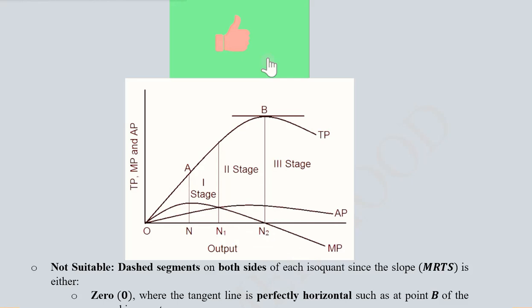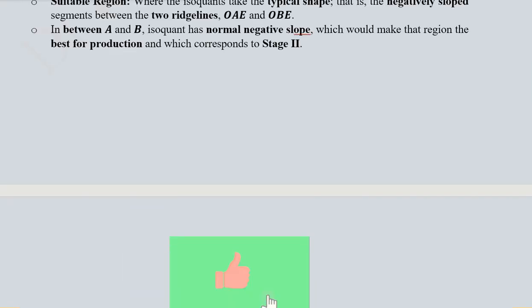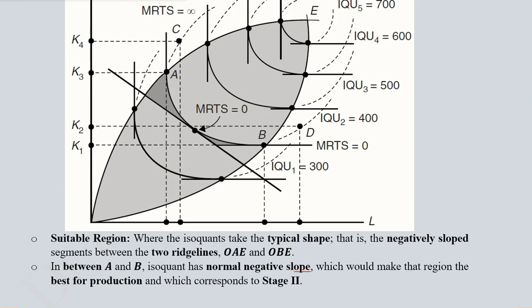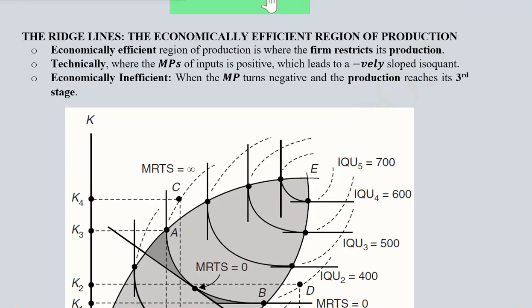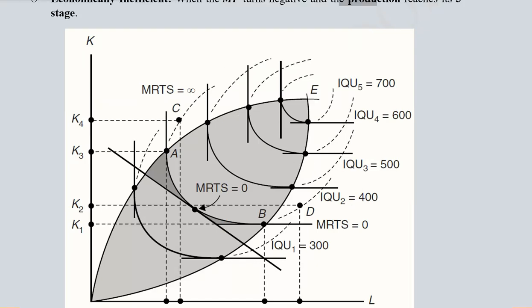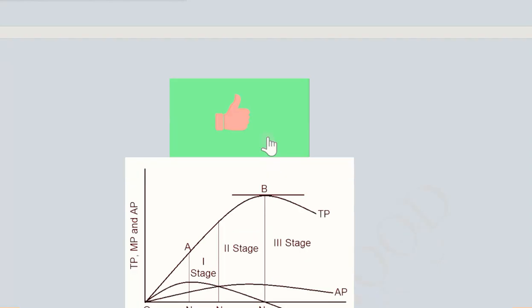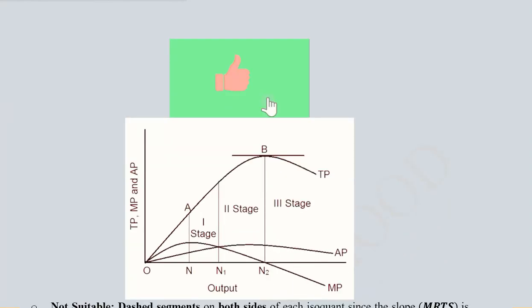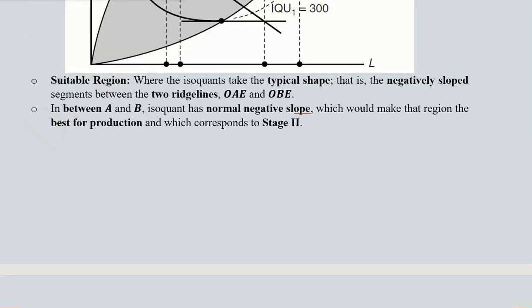So we are interested in these stages where the MP is still positive, and this is that stage beyond which the desirability ends. In this diagram, in this region we have a positive MP of the inputs. If we consider the economically inefficient area, where the MP would turn negative and the production will reach the third stage, this is that area where the MP will become negative. Here you can see it is below the x-axis and the MP is now negative.